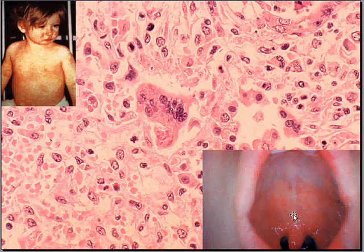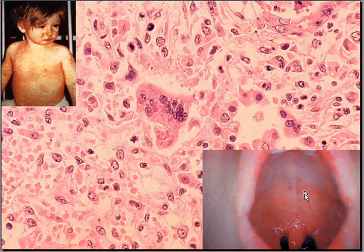Another thing to remember in measles is that it is a respiratory infection. There's usually severe upper respiratory infection. And often, before the appearance of the skin lesions, you can see, besides a pharyngitis, little whitish patches called Koplik spots — K-O-P-L-I-K — named after Dr. Koplik.